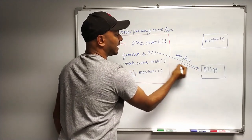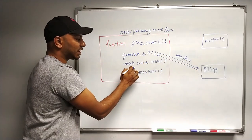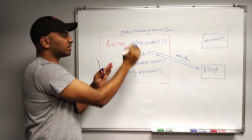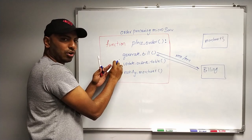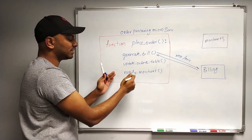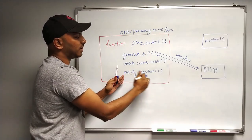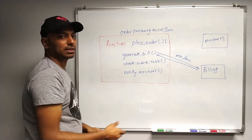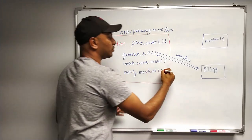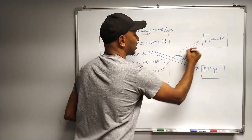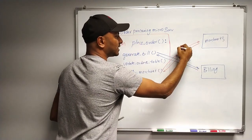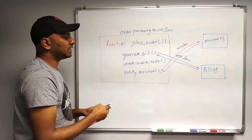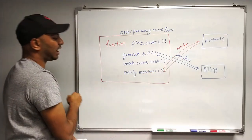After calling the billing microservice via HTTP or RPC and getting the response back, we then update the orders table — this is actually the responsibility of the order processing microservice and runs locally in the same instance. Then we have to execute notify merchant, which is not the order processing microservice's responsibility, so we again call the merchant microservice, either by HTTP or RPC.